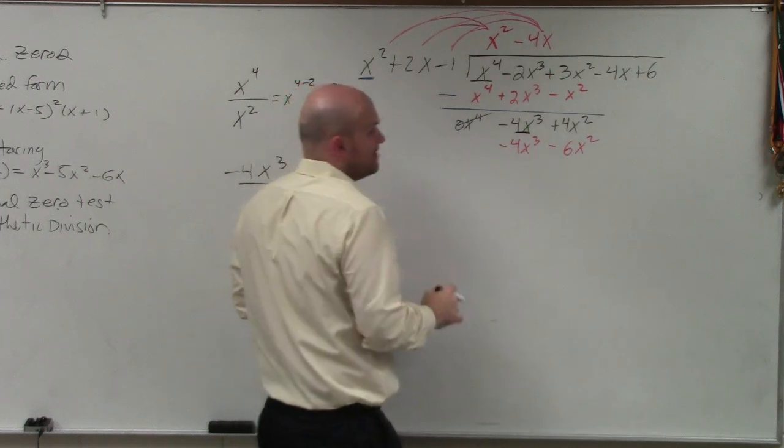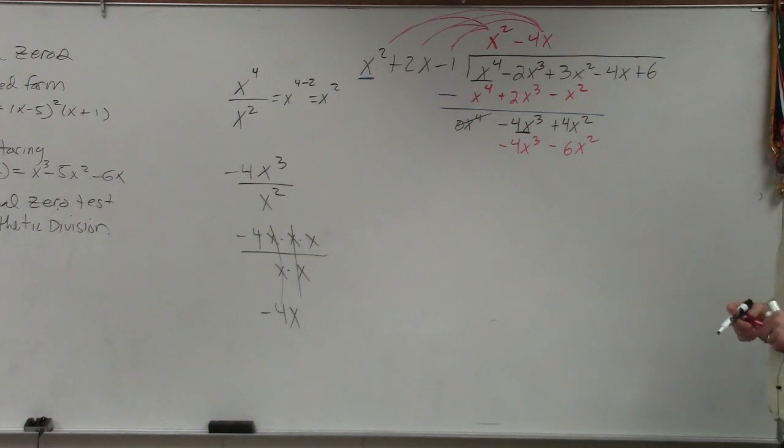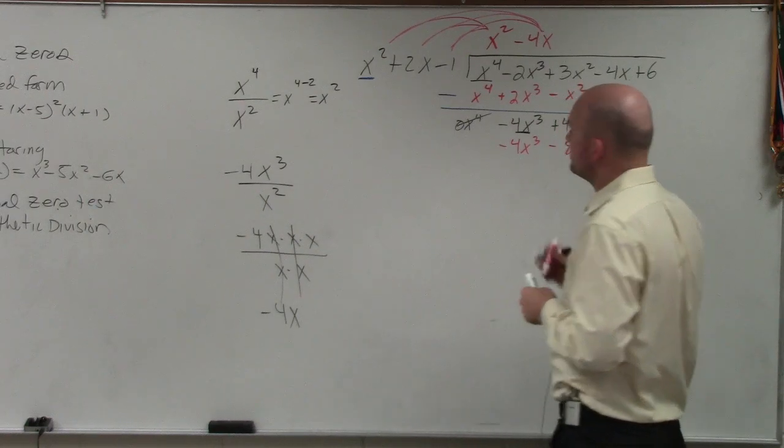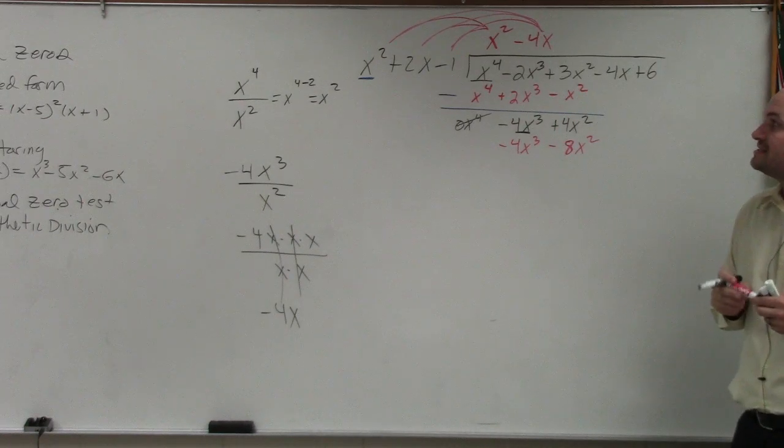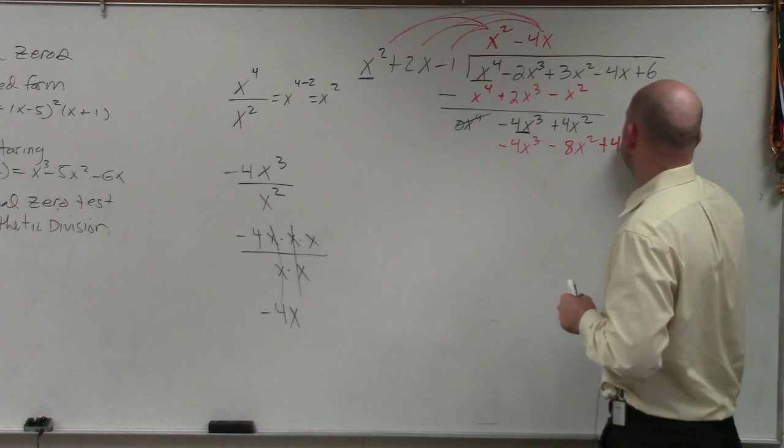Now we're multiplying them back again. Wouldn't it be negative 8x squared? Where? Since you're doing negative 4x times positive 2x. Yeah. I don't know where that is. Negative 8x. I don't know. Man, I'm like, I'm making those minimal mistakes. Sorry about that. And then negative 4x times negative 1 is going to be a positive 4x. Right?